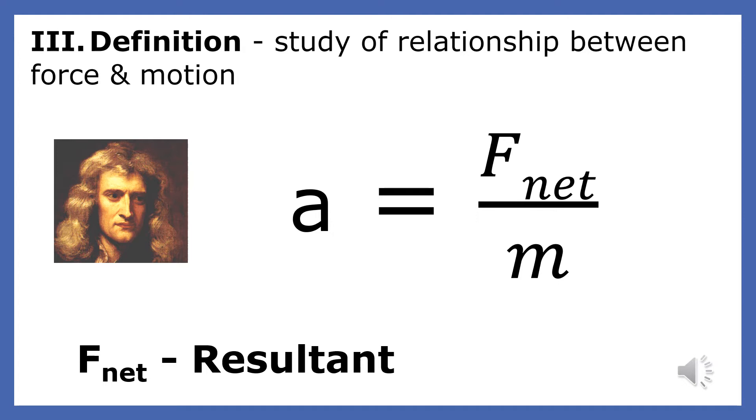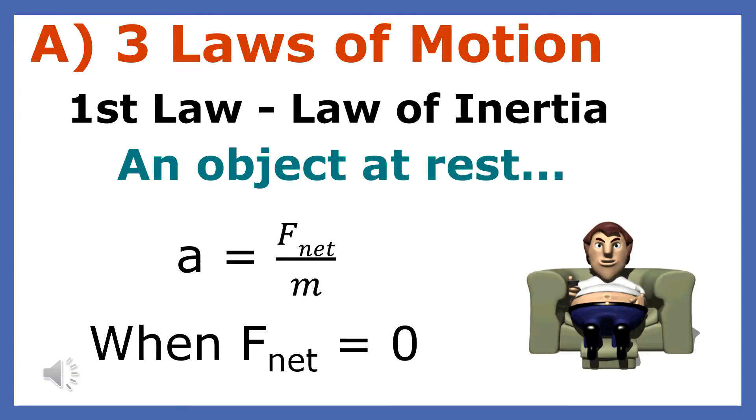Large net forces create large accelerations, and larger masses are more difficult to accelerate than small masses. Newton's first law is called the law of inertia, and it describes what happens to the acceleration of a body when the net force on it is zero.